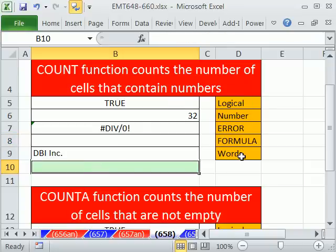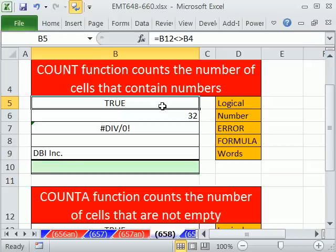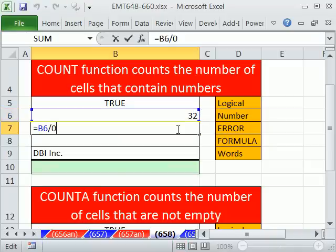Now, there are five types of things that you could put in a cell. You can have a logical value like TRUE or FALSE, or it could be delivered by a logical formula. You can put a number. You can have an error, like a formula divided by 0 is an error because it gives you divide by 0.